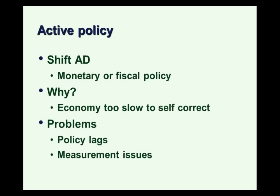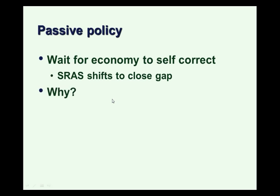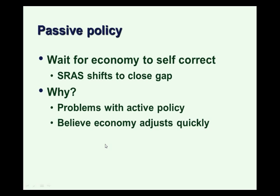Those who advocate passive policy think we should stand back and wait for the economy to self-correct. They argue that because of measurement lags, the government would cause more problems than it solves. Passive policy would say wait for short-run aggregate supply shifts to close the gap, citing all the problems with active policy as insurmountable. They also believe the economy adjusts quickly and favor creating an environment with wage and price flexibility so that self-correction can happen relatively quickly. The problem with passive policy is that if formal and informal institutions make wages and prices sticky, then self-correction may not work.